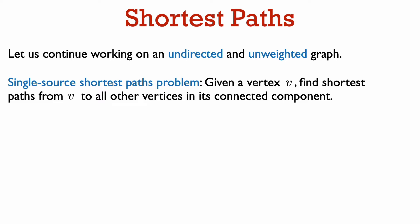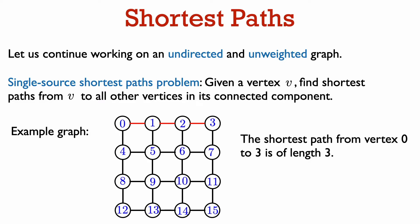All graphs in this video are going to be undirected and unweighted. Let us consider a problem called the single-source shortest paths problem. Given a vertex v, we want to find the shortest paths from v to all the other vertices in its connected component. The example graph we are going to look at is this grid graph, and we want to find the shortest paths from vertex 0 to the other vertices. In particular, we are going to look at the shortest path from vertex 0 to vertex 3.